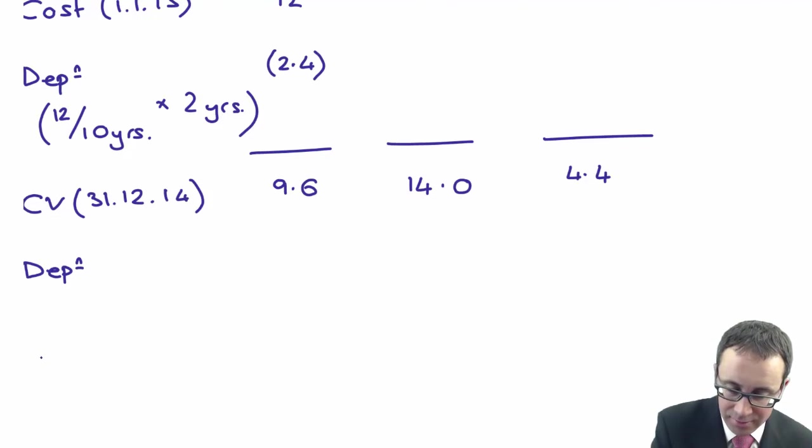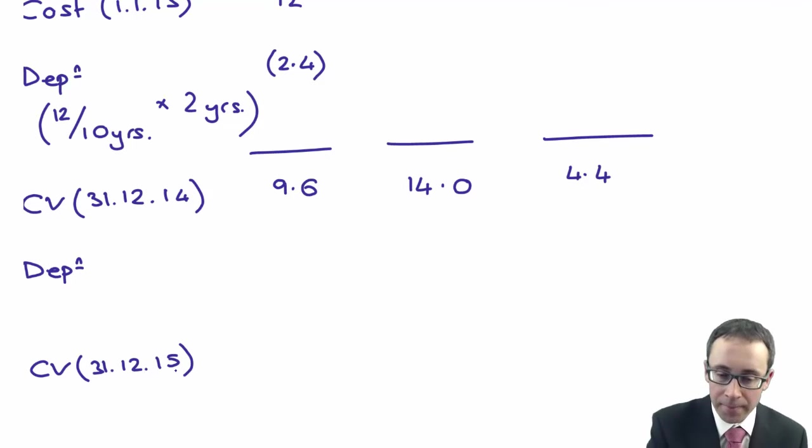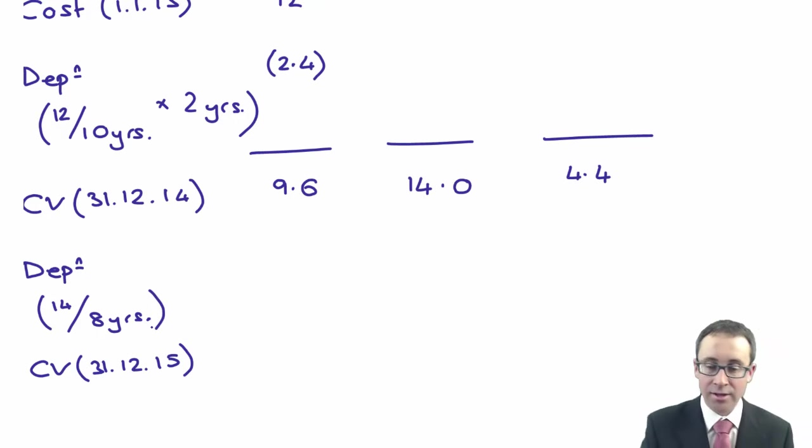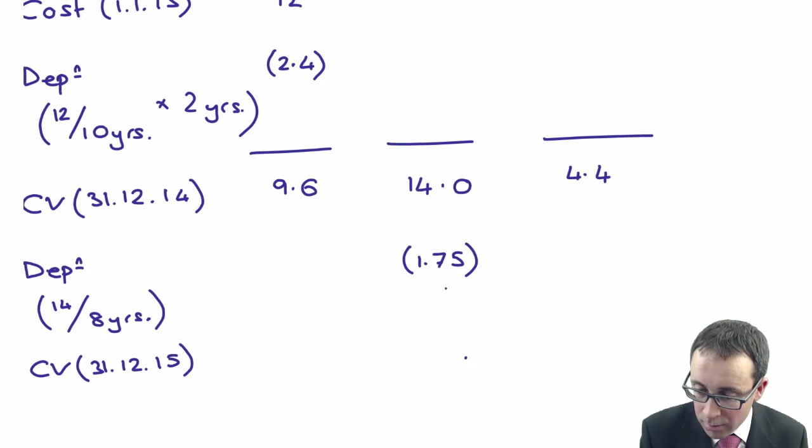Now we need to go through and look at how to account for this revaluation at 31st of December 2015. We will have now depreciated this asset of 14 over the remaining life of eight years. So 14 divided by 8 is 1.75. 14 less the 1.75 gives me a carrying value of 12.25.